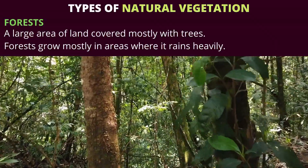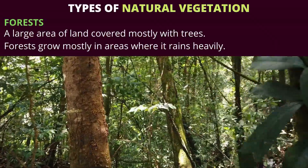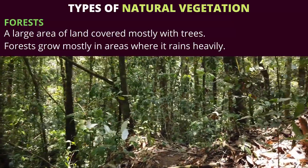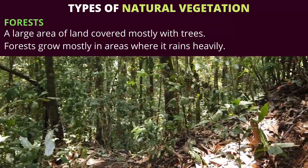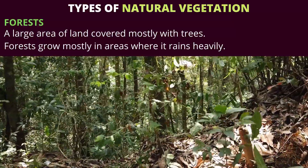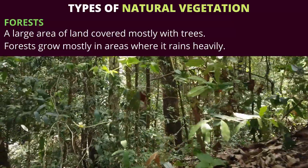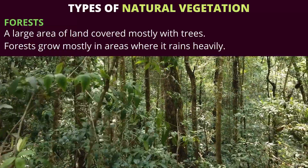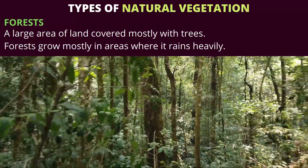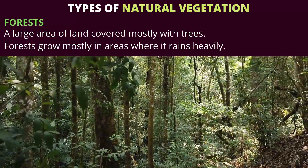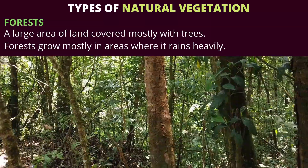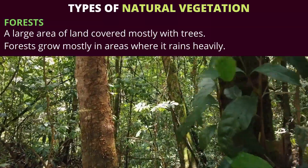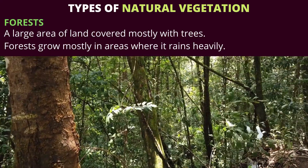Types of Natural Vegetation: Forests. What is a forest? It is a large area of land covered mostly with trees. Forests grow mostly in areas where it rains heavily.